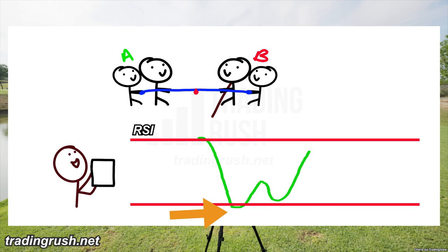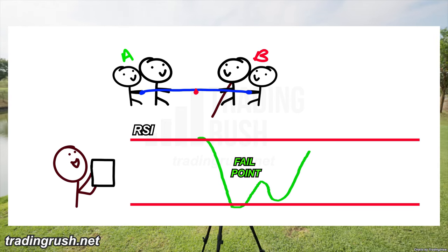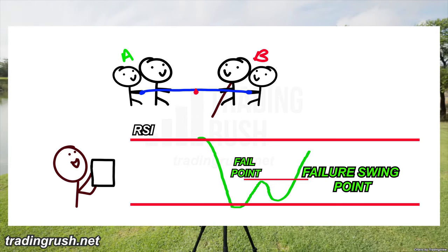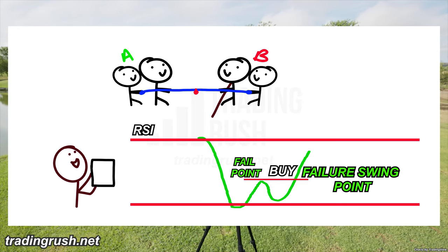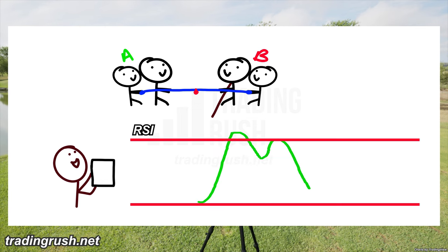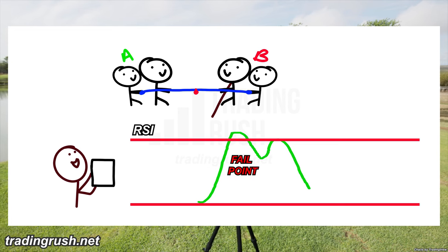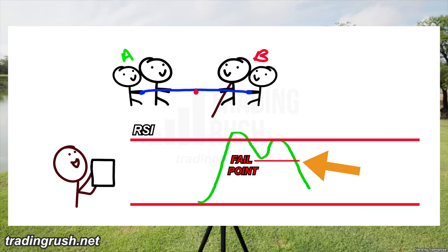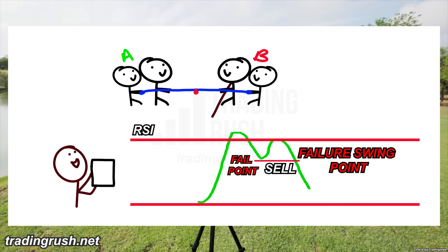The RSI creator gave names to these moves. When the price goes out of the oversold zone, the highest point it reaches is called the fail point. When the price goes up again and crosses the fail point, this is called a failure swing point — at this point, the RSI creator suggests buying. Similarly, when the RSI comes down from the overbought zone and reverses, that's another fail point. When the price then crosses below the fail point, that's the failure swing point for selling.